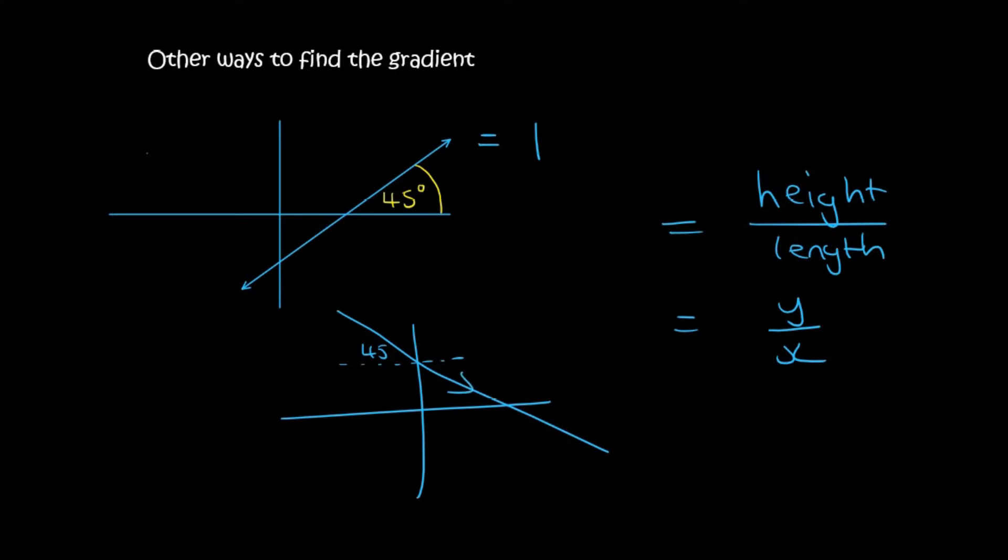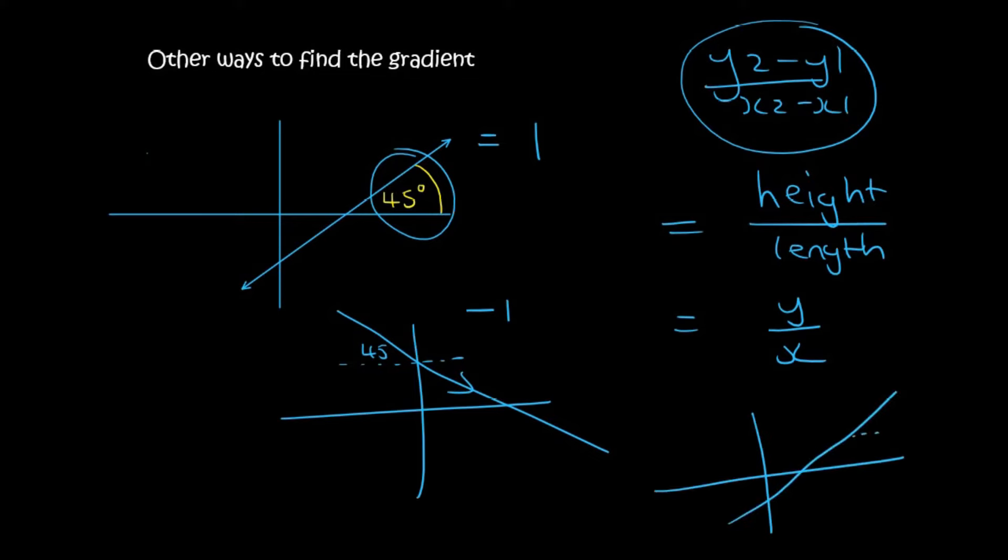So it's only this method where you say y2 minus y1 over x2 minus x1, that method is really nice because it determines whether it's positive or negative for you. Whereas with the 45 degree or with the triangle method, you know, the one I showed you just now where you've got a triangle, that you need to know whether it's positive or negative.